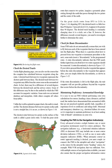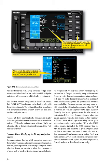With VOR navigation, that was sufficient. Now, with multiple sources of navigation data available, you must also ensure that the proper navigation information source was selected in the FMS. Every advanced cockpit offers buttons or switches that allow you to choose which navigation indications will be shown on which display or instrument. This situation becomes complicated in aircraft that contain dual FMS/RNAV installations and redundant selectable displays or instruments.